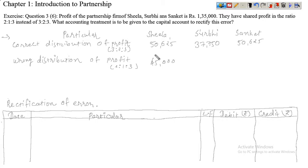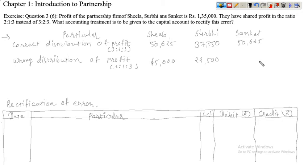Usi tarike se Surbhi ke liye: 1,35,000 multiplied by 1 divided by 6, so uska profit would be Rs 22,500. And the last one Sanket — uska profit aega 1,35,000 multiplied by 3 divided by 6, so uska proportion aega Rs 67,500. Yeh galat tarike se distribute kiya gaya hai.